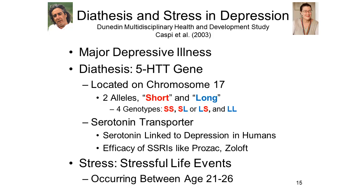This 5-HTT gene is of interest because it's a serotonin transporter, and we believe that serotonin is linked to depression in humans. Not least because there are certain drugs, known as selective serotonin reuptake inhibitors, that act on the serotonin system. Prozac and Zoloft, for example, are popular drug treatments for major depressive disorder.